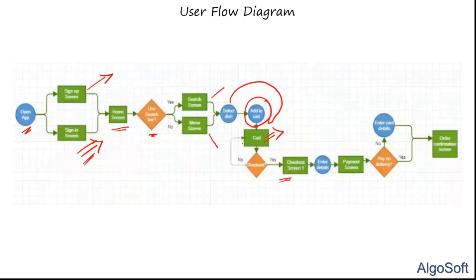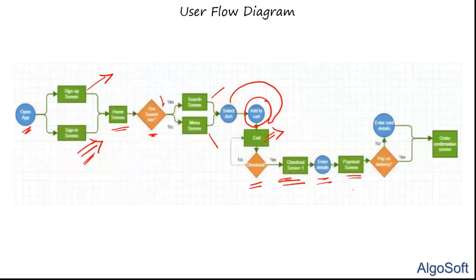The flowchart defines decision paths — for example, if a user doesn't check out they return to the cart, if they do they proceed to checkout with payment information. After entering card or net banking details, options like pay-on-delivery are presented. Eventually the flow reaches an order confirmation screen.